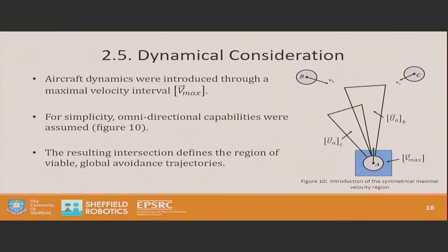My personal interests lie in rotary-wing and coordinated flight of multiple vehicles. Because of this, we've assumed that the agent itself is capable of omnidirectional motion — it can accelerate equally in all directions. We've made an approximation of its capabilities as this bounded blue square, which represents the range of velocities relative to the obstacle that the agent can achieve. Taking the intersection with the global optimal regions and these dynamic possibilities gives us the viable actions available to the agent at the time.